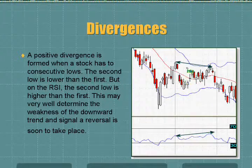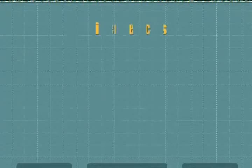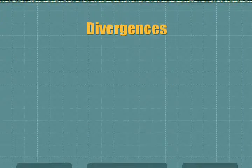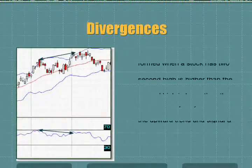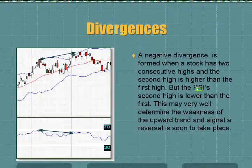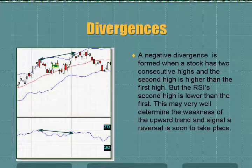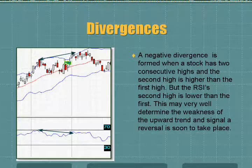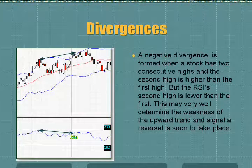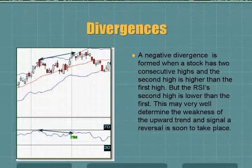See up there, where we have a lower and higher. Now the second one is going to be called a negative divergence. This is formed when a stock has two consecutive highs. The second is higher than the first high. But the RSI second high is lower than the first. This may very well determine the weakness of the upward trend and signal a reversal will soon take place in the stock.